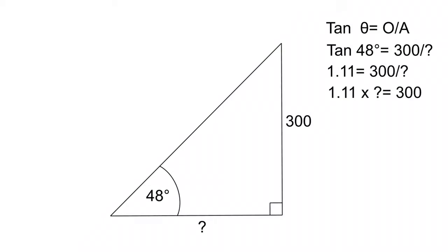So we transpose that. Now we've got 1.11 times the unknown is equal to 300. So we have to make one more step in our transposition, which tells us that our unknown is equal to 300 divided by 1.11. And we get our value of 270.